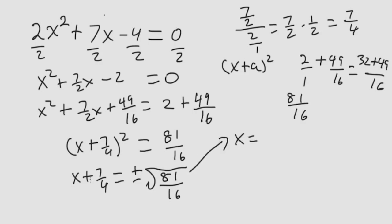So we have x is equal to minus 7 fourths to the other side, negative 7 fourths, plus or minus square root of 81 over 16, which is 9 over 4.